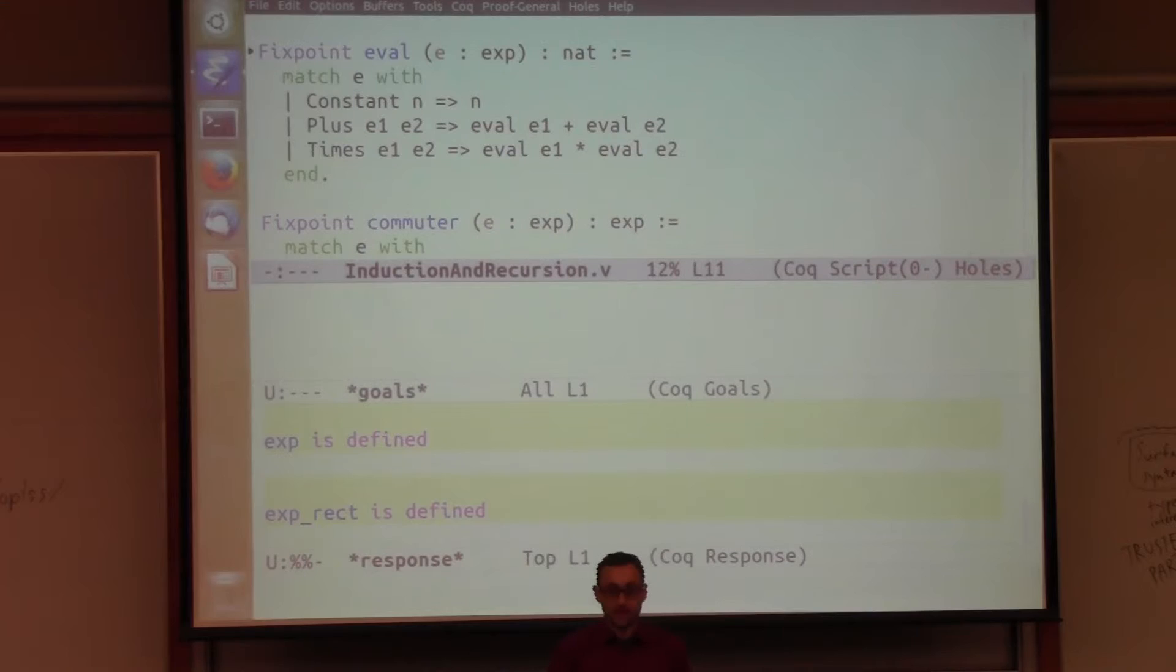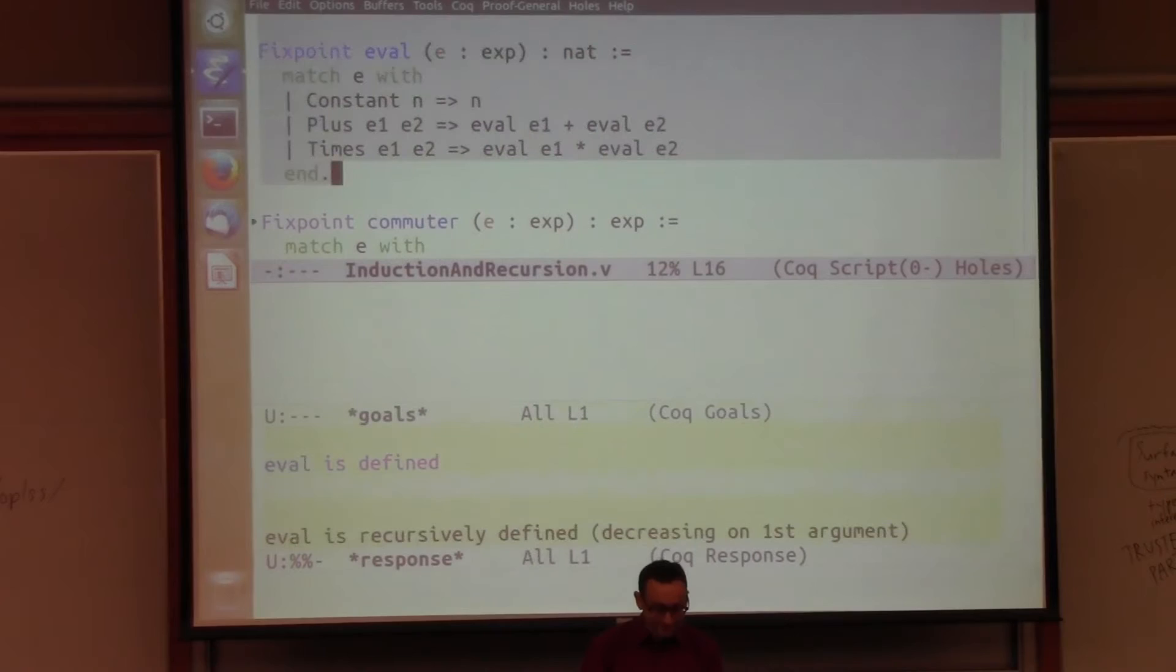All right so we have a definition of a type. Now we might want to define an operation on that type. Here's one called eval that is going to take an expression and evaluate it to produce a number. So we write the keyword fixed point for a recursive function and we give a type for the argument and here's the return type. We use a pattern matching construct which is very similar to the ones in ML or Haskell. We check to see what kind of expression we're working with if it's a constant we just pull out the number n that is the argument and we return that. If it's a plus we get two sub expressions e1 and e2 we should evaluate those and add them together and if it's a times we do the same thing where I write a star instead of a plus. You can use unicode in Coq but I'm not going to be doing it so we have an asterisk instead of anything fancier. But this is an evaluation function.